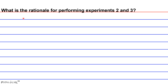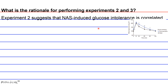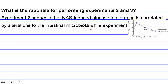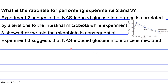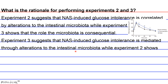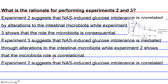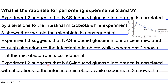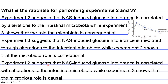What is the rationale for performing Experiments 2 and 3? Option A: Experiment 2 suggests that NAS-induced glucose intolerance is correlated with alterations to the intestinal microbiota, while Experiment 3 shows that the role of microbiota is consequential. Option C: Experiment 2 suggests that NAS-induced glucose intolerance is correlated with alterations to the intestinal microbiota, while Experiment 3 shows that the microbiota role is causal.